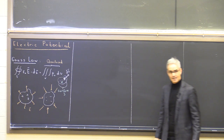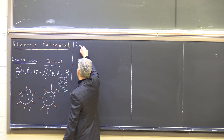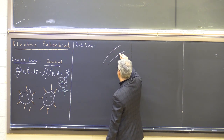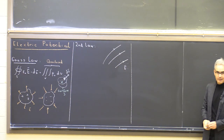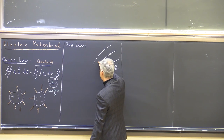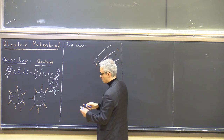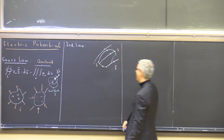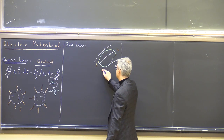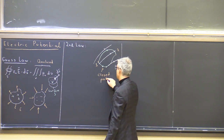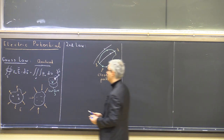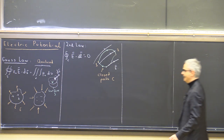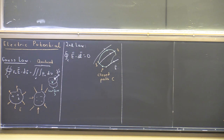The electrostatic field also satisfies a second law, which says that if you have an electrostatic field and you take a closed path integral — you go from point 1 to point 2 and then come back along an arbitrary closed path C — the line integral of E·dl along that closed path will be zero. So the closed path line integral of the electrostatic field is always zero. What is dl? It is the differentially small length element.